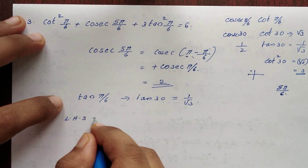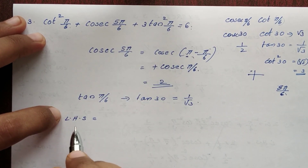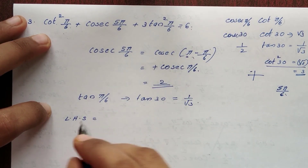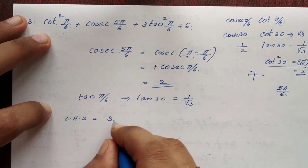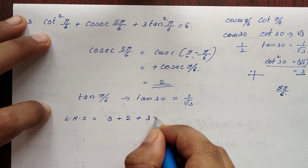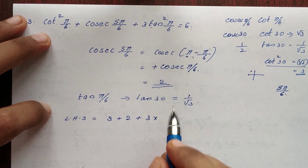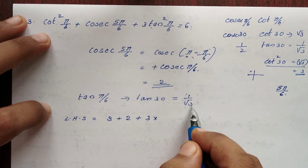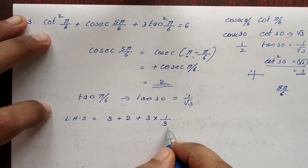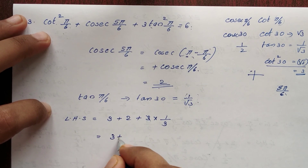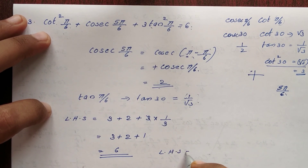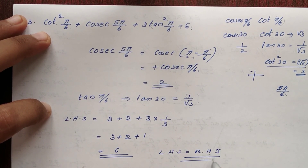Substituting all three values: LHS equals cos²(π/6) plus cosec²(5π/6) plus tan²(π/6). cos²(π/6) equals 3 by 4, cosec²(5π/6) equals 4, and tan²(π/6) equals 1 by 3. This is equal to 3 plus 2 plus 1, that is equal to 6. So LHS is equal to RHS.